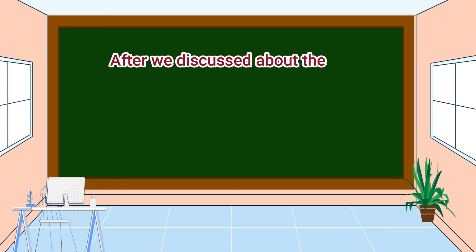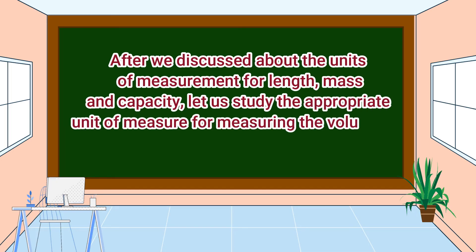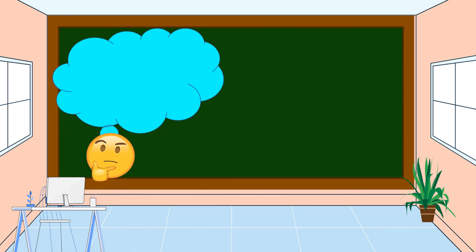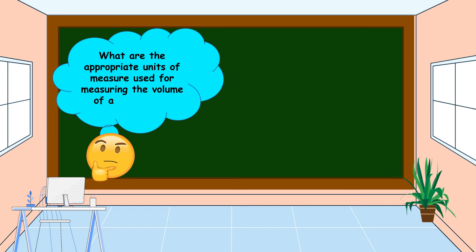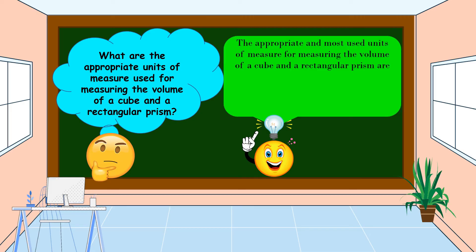Now let us study the appropriate unit of measure for measuring the volume of a cube and a rectangular prism. Since a cube and a rectangular prism are solid, the appropriate and most used units of measure for their volume are cubic millimeter, cubic centimeter, and cubic meter.